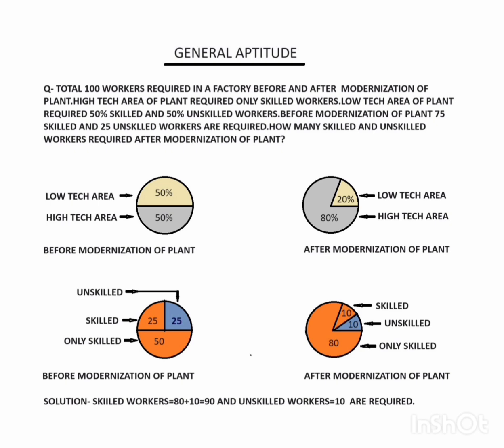After solving this equation, after modernization of the plant: skilled workers total 80 plus 10 equals 90 required, and unskilled workers 10 required.